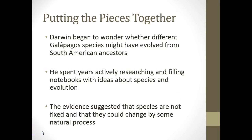Over this five-year voyage, Darwin had to put together a lot of pieces to come up with his hypothesis of evolution. One major stop was the Galapagos Islands, just off of South America. Darwin began to wonder whether different Galapagos species might have evolved from some South American ancestors — perhaps the islands split off from South America, causing change in different species. He spent years filling notebooks with ideas, and the evidence suggested that species are not fixed and could change by some natural process.